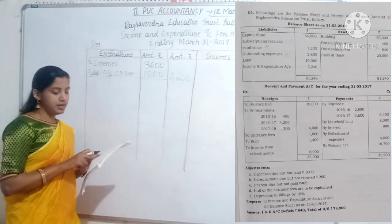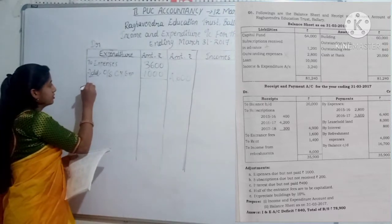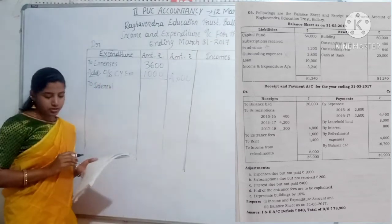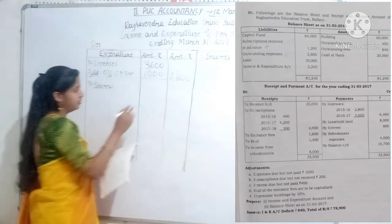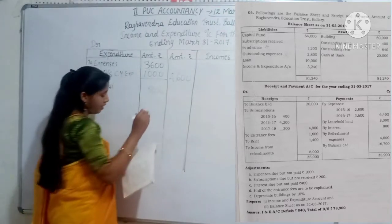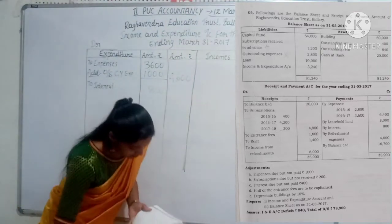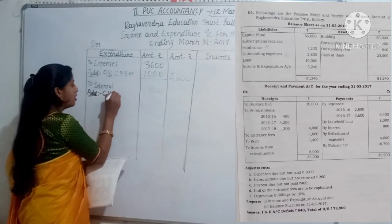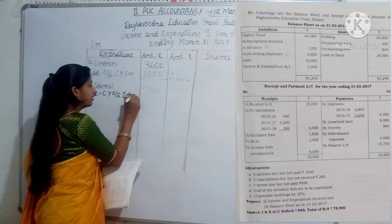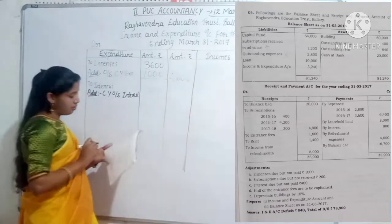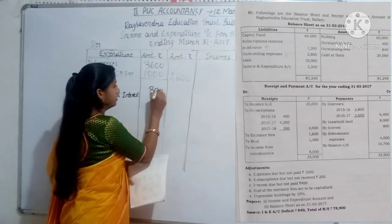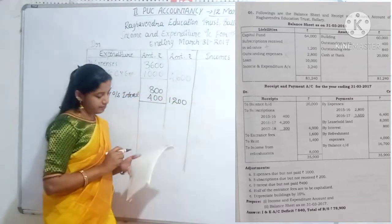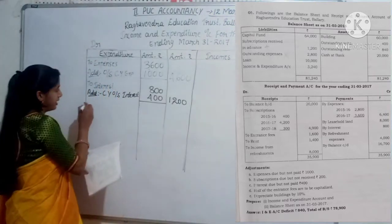Lease hold land is a balance sheet entry. Next, interest: Rs. 800. Adjustment entry: outstanding current year interest Rs. 400. Therefore, 800 plus 400 equals total Rs. 1,200. Next entry: refreshment expenses Rs. 4,000.